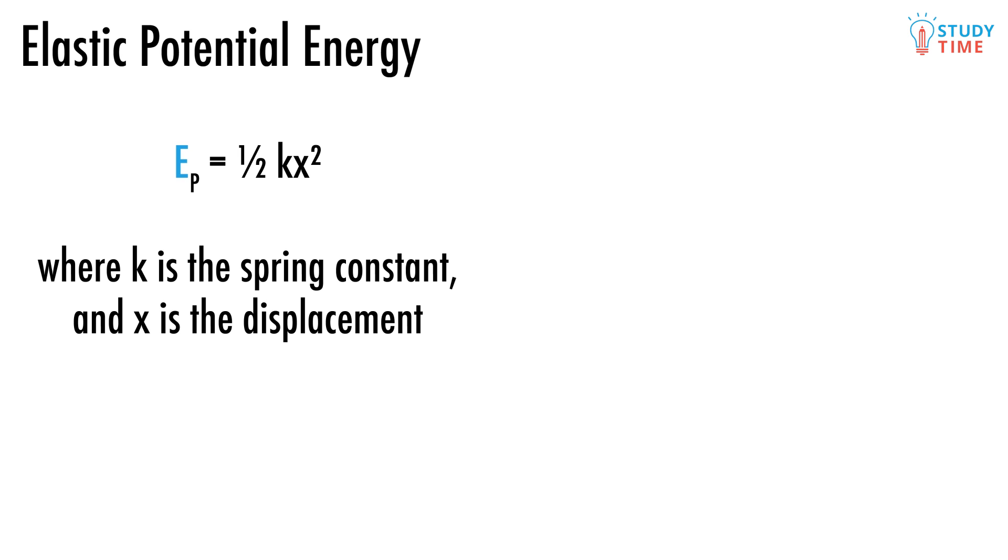If we know the spring constant of a spring, and we know how much it has been extended or compressed, it's super easy to work out the elastic potential energy that's going to be stored. This should look a bit familiar to you, and the reason why is because this equation is alarmingly similar to the equation we used for kinetic energy. The only things that have changed are that k is the spring constant, and x is the distance that the spring has moved from its resting position.